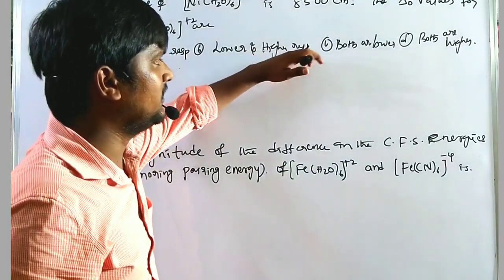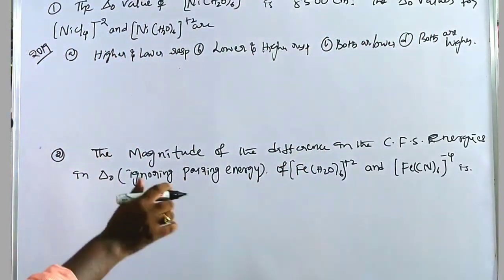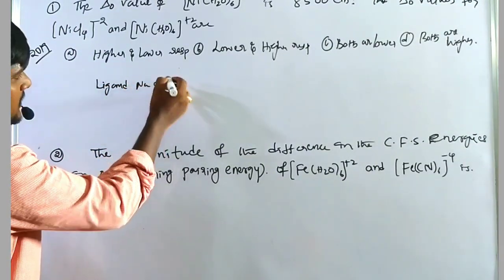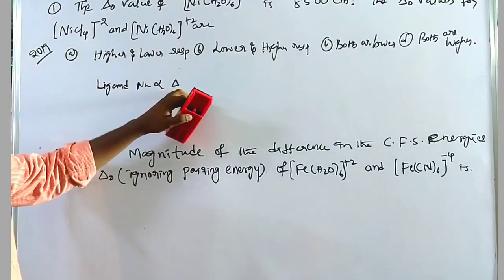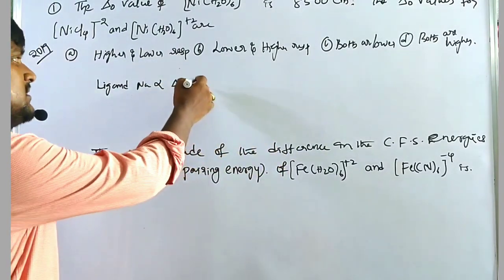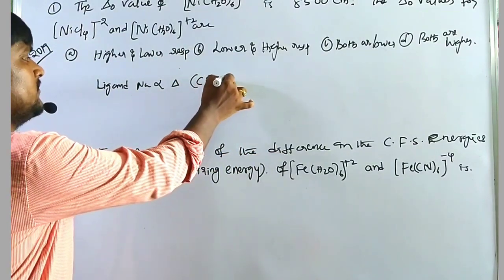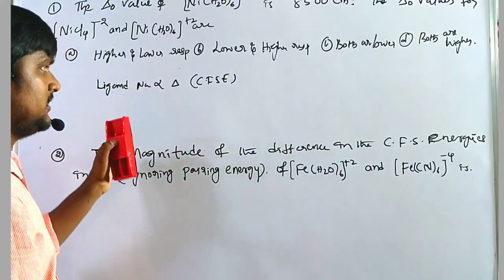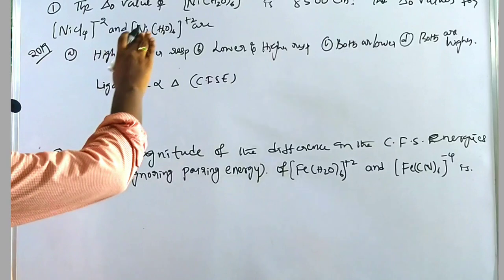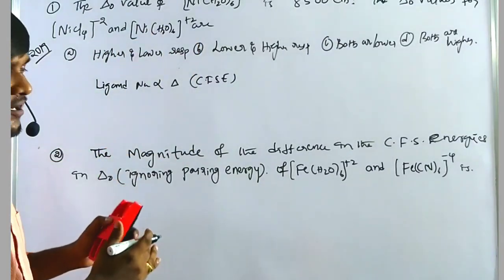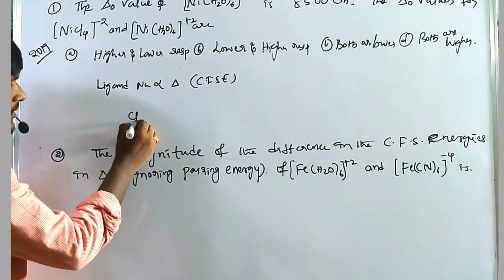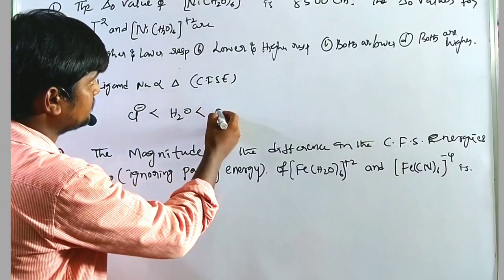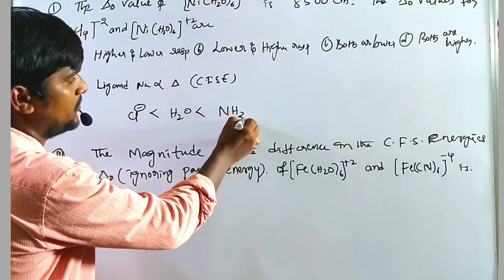So either higher or lower. We know that ligand nature is directly proportional to the crystal field splitting energy (CFSE). A stronger field ligand gives more energy compared to a weak field ligand. From the spectrochemical series, chloride ion is less than water, and water is less than ammonia.